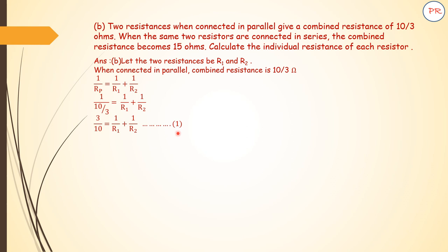The second condition: when they are connected in series, combined resistance is 15 ohms. In series, both resistances get added up. So mathematically, R1 plus R2 equals 15. These are the two conditions.